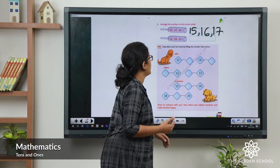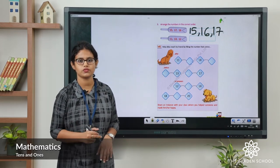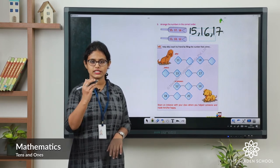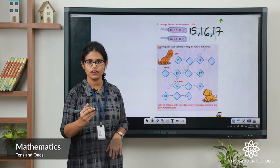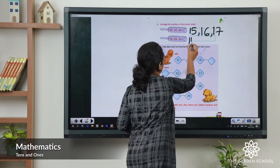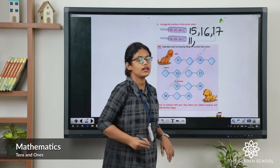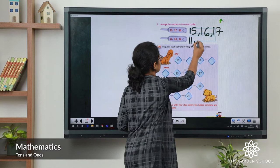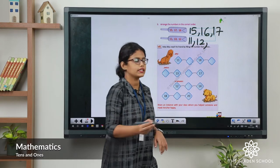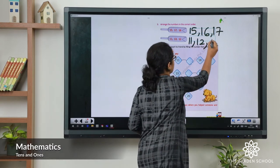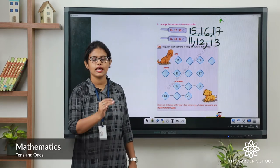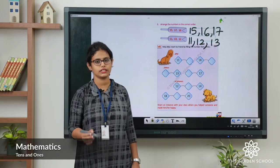See the next one: 11, 13, 12. Make it in the correct order. After 10 comes 11, then 12, then 13. So the correct order is 11, 12, 13.